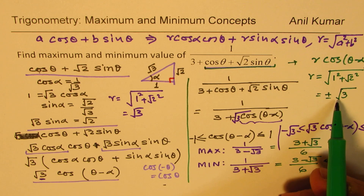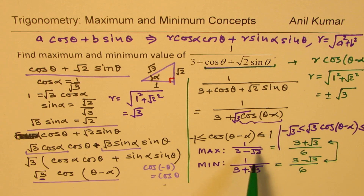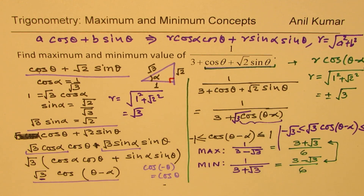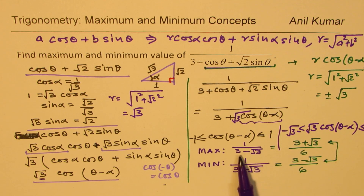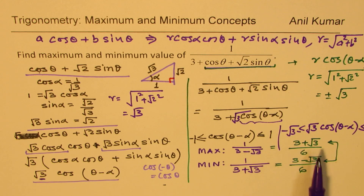These are the two extreme values, so substituting +√3 or −√3 in the denominator: a lower denominator gives a higher value, so −√3 gives the maximum and +√3 gives the minimum. At times the answer is rationalized by multiplying by the conjugate of the denominator.